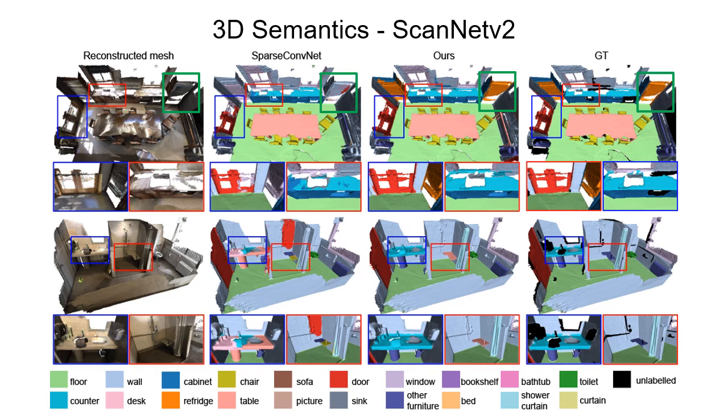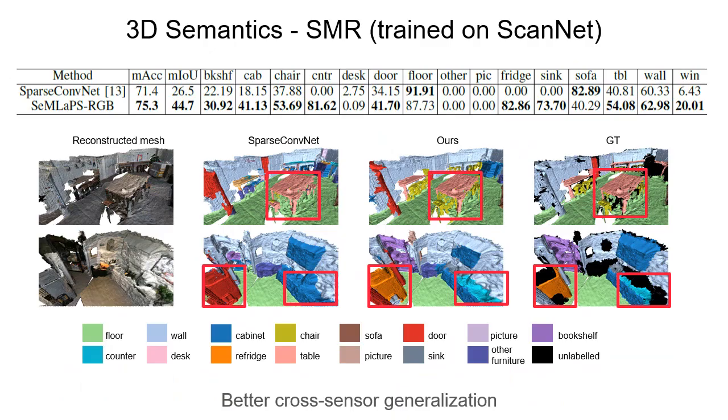Here is a more detailed qualitative comparison. SemLaPS performs better in classes that rely more on visual features, such as refrigerator and counter. See the green box and zoomed-in views. SemLaPS also produces smoother and less fragmented segmentation boundaries compared to the 3D network baseline.